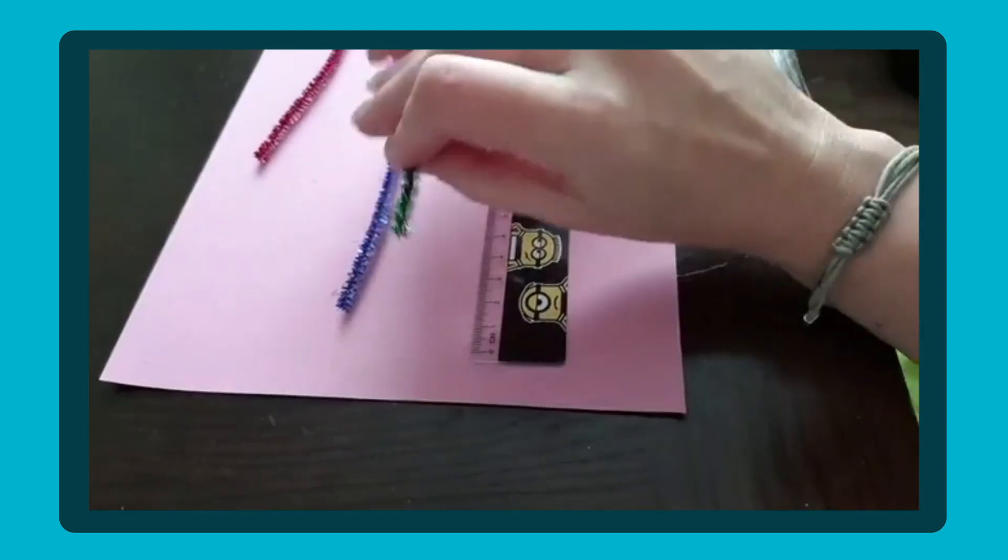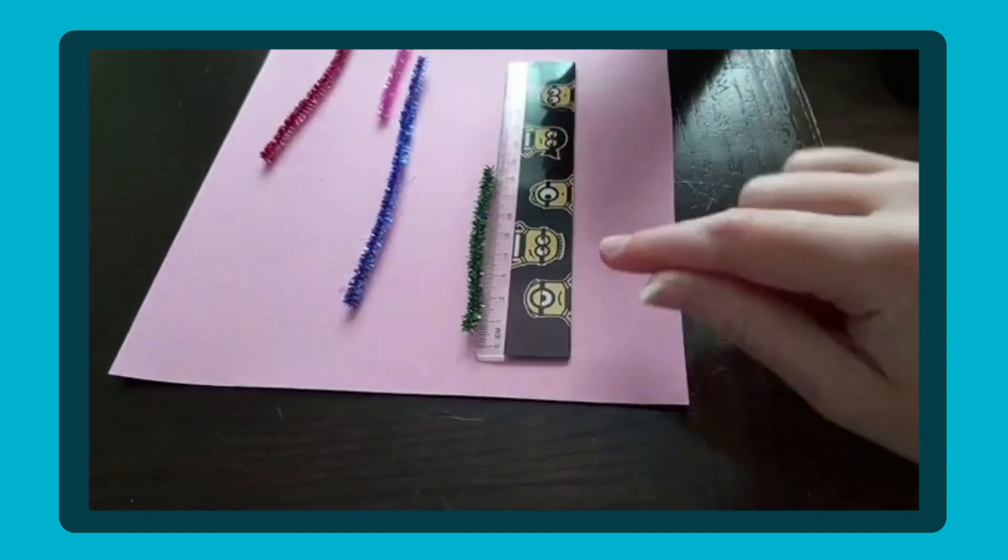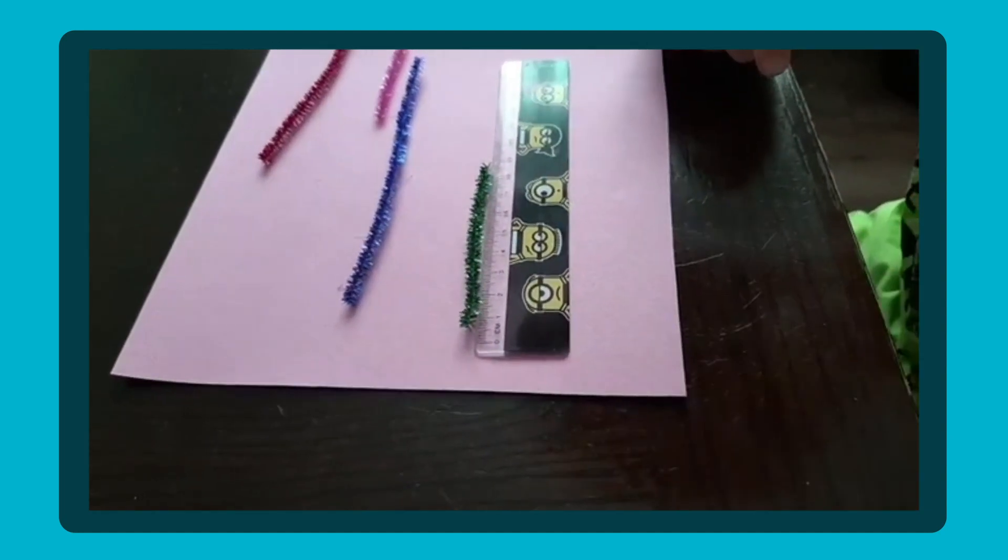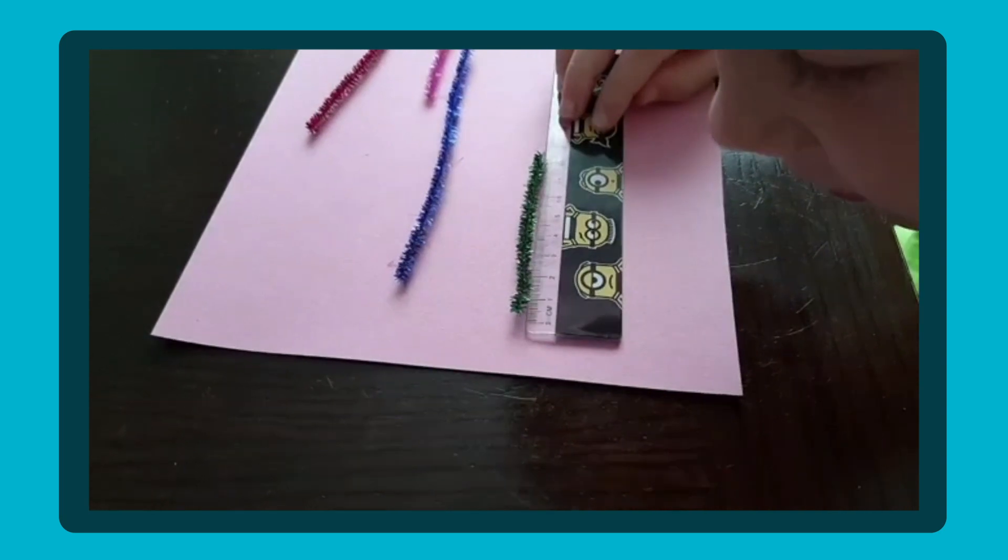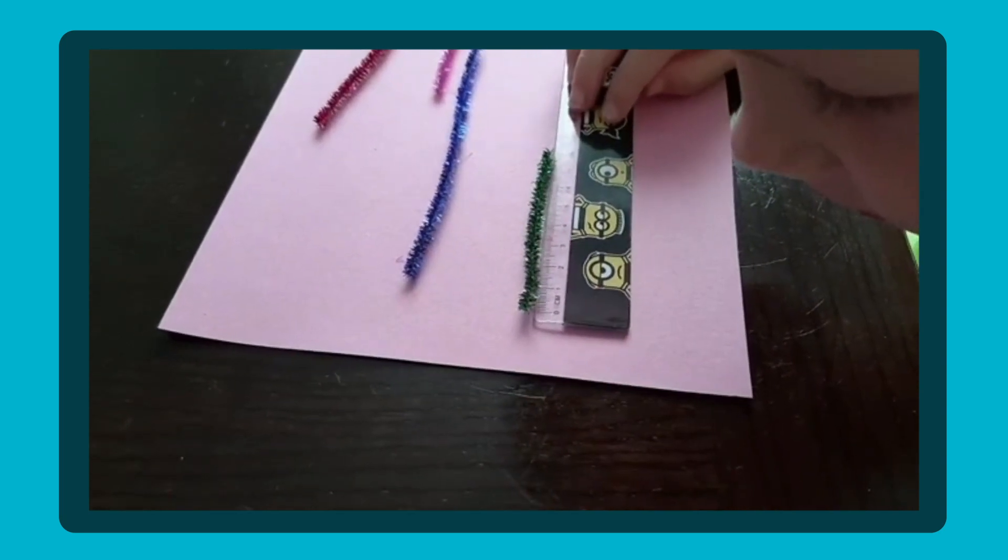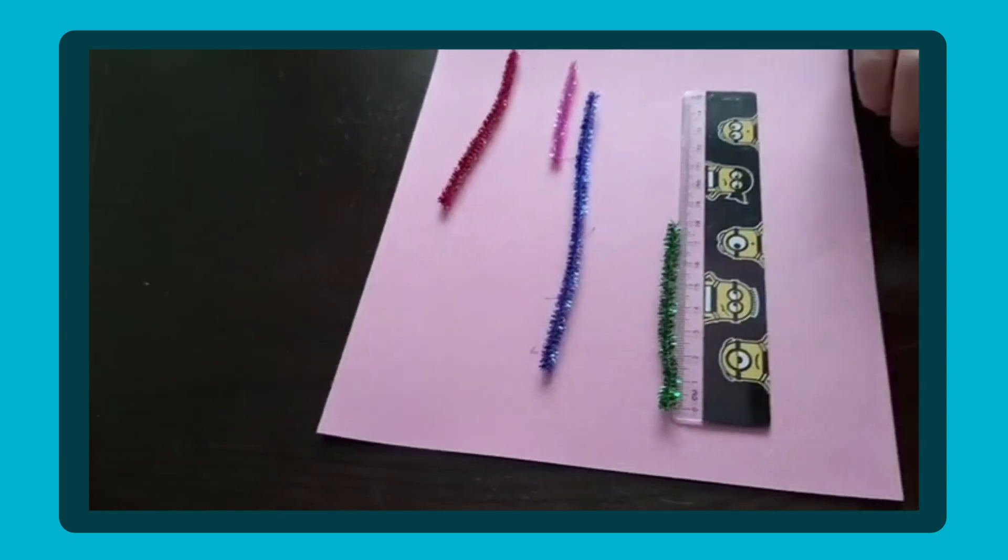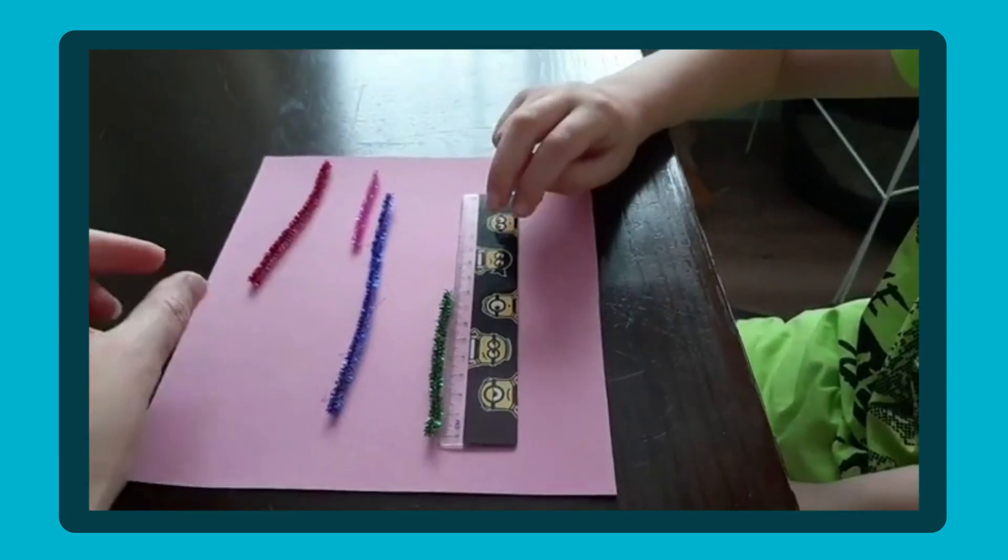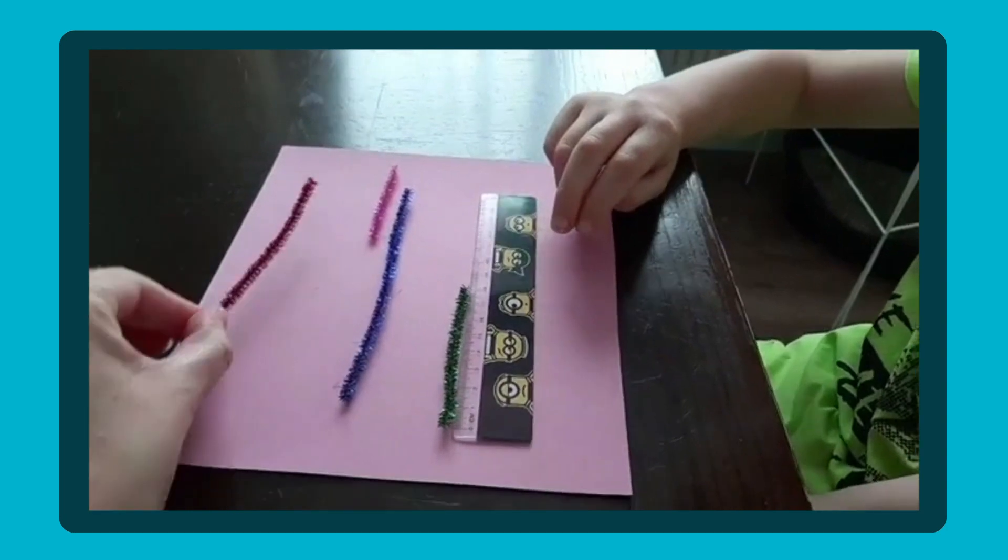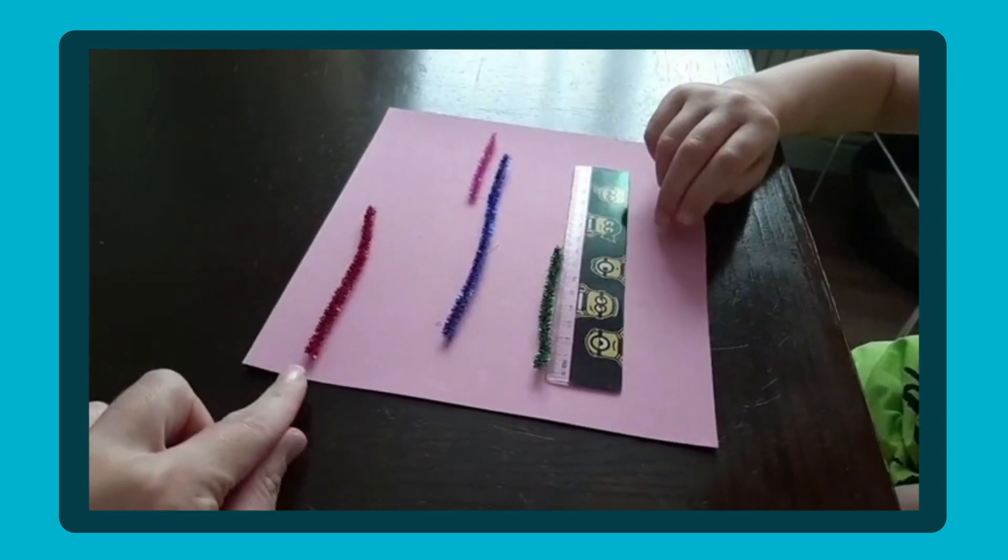So let's just put that down. Try moving your ruler to the right place rather than the wiggly worm, so you want to start at zero, don't you? That's it. What does that measure? How many centimeters? Eight centimeters.